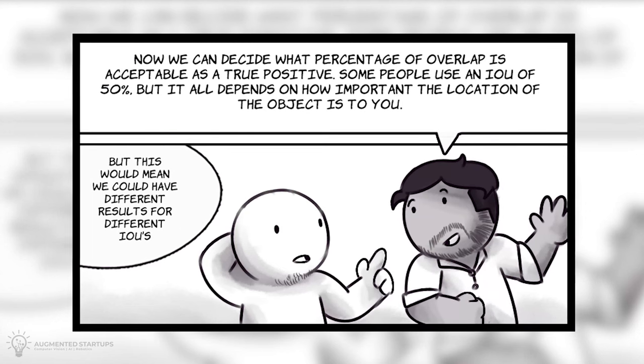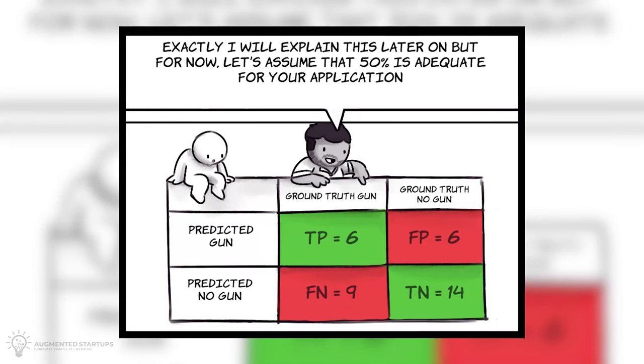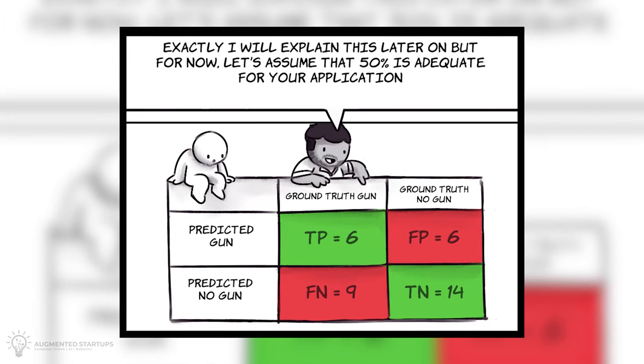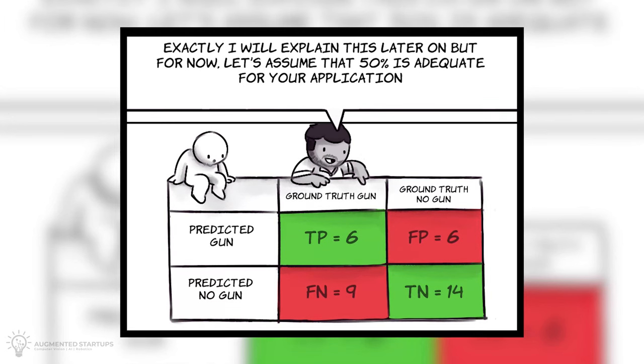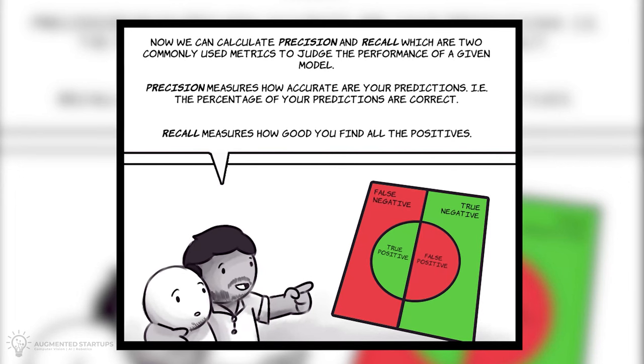But this would mean we could have different results for different IOUs. Exactly. I'll explain this later on. But for now, let's assume that 50% is adequate for your application. Now, we can calculate precision and recall, which are two commonly used metrics to judge the performance of a given model.